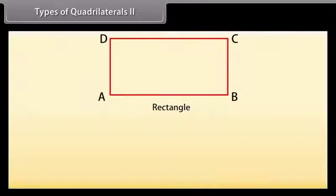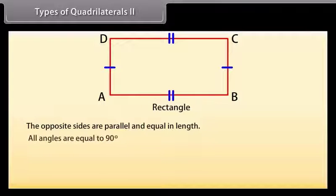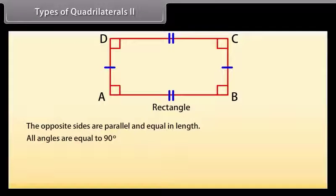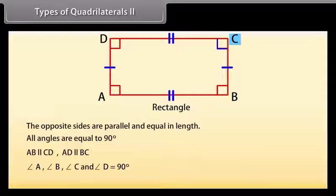Now, rectangle: in a rectangle the opposite sides are parallel and equal in length, and all angles are equal to 90 degrees. Here AB is parallel to CD and AD is parallel to BC, and the angles A, B, C, and D are all 90 degrees, so ABCD is a rectangle.